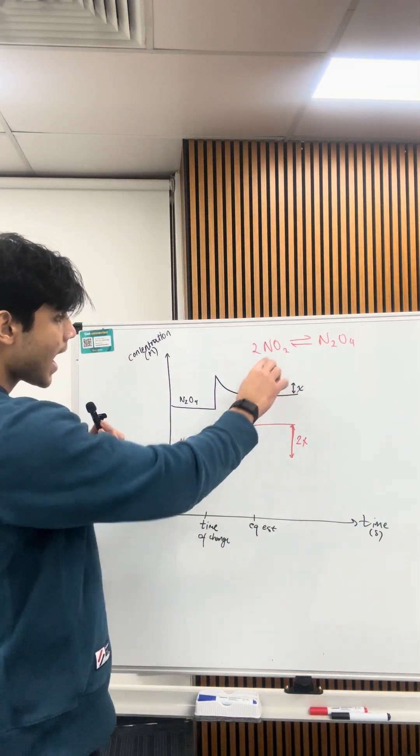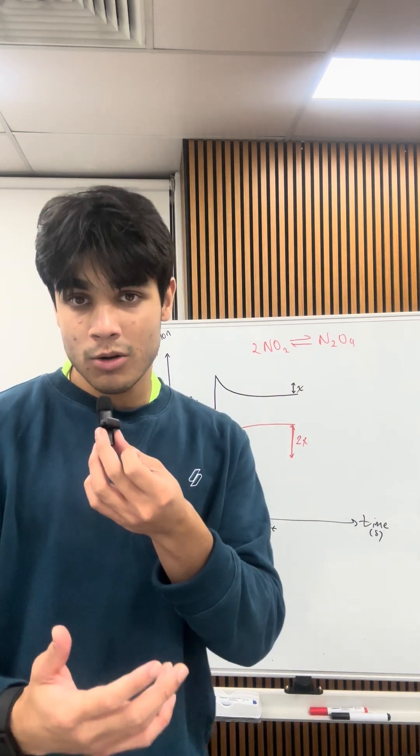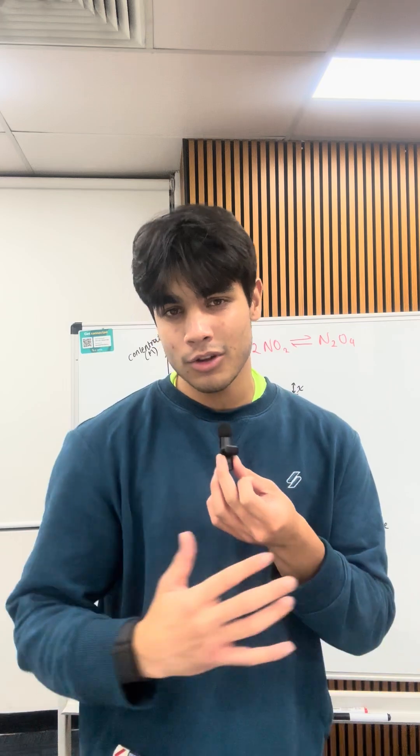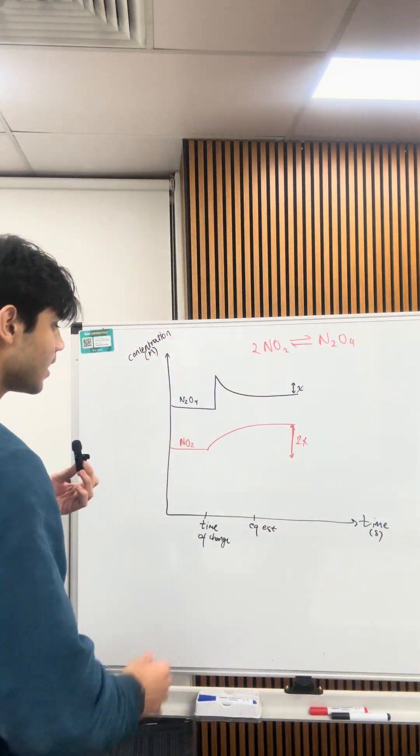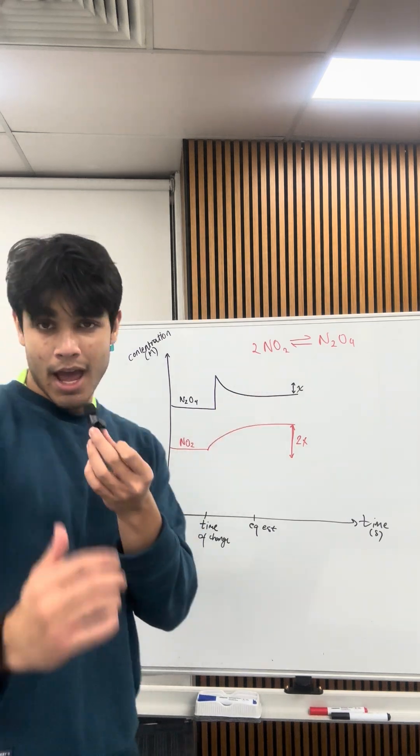I know that NO2 has a 2 to 1 molar ratio. So I should expect the change of NO2 to be reflected at twice the level of dinitrogen tetraoxide, meaning that my change would be 2x, and my change of N2O4 would be just x.